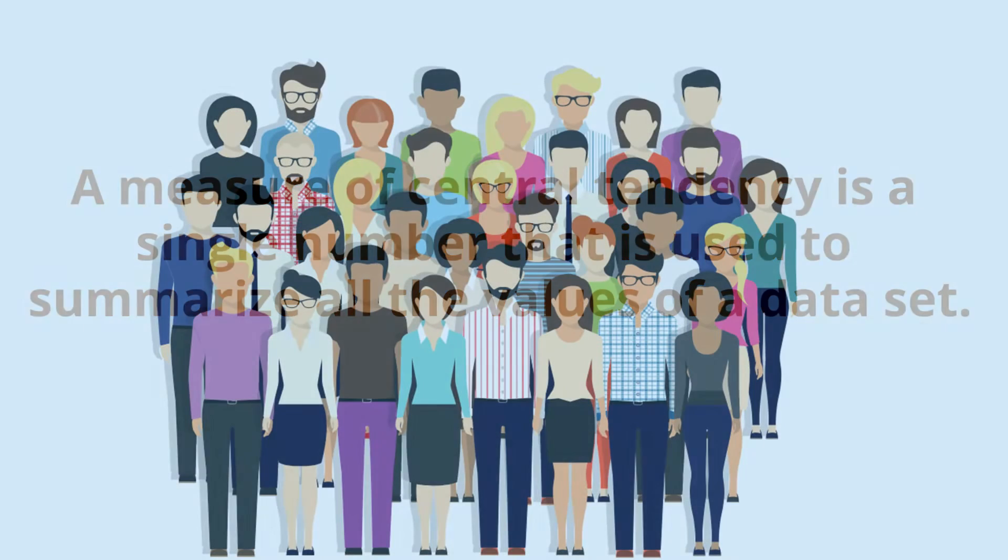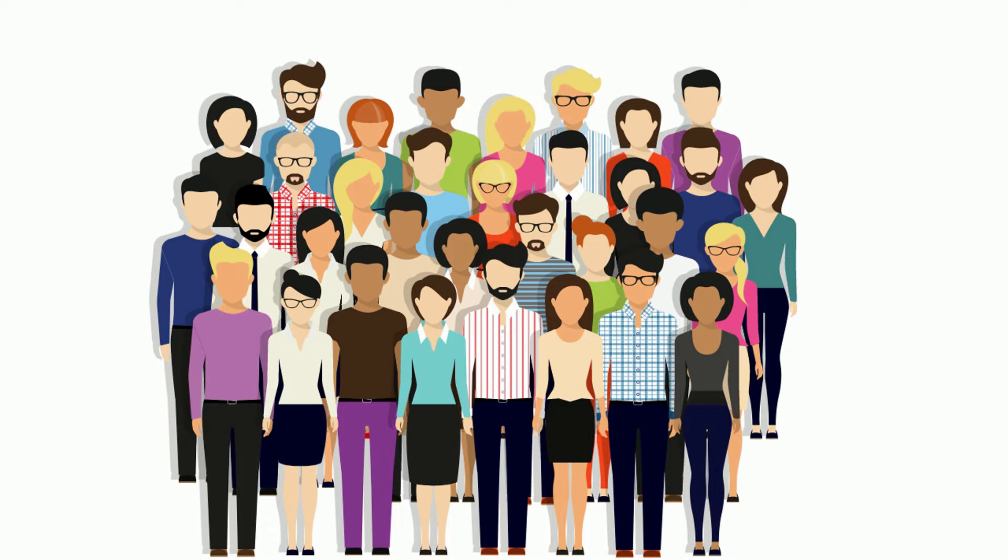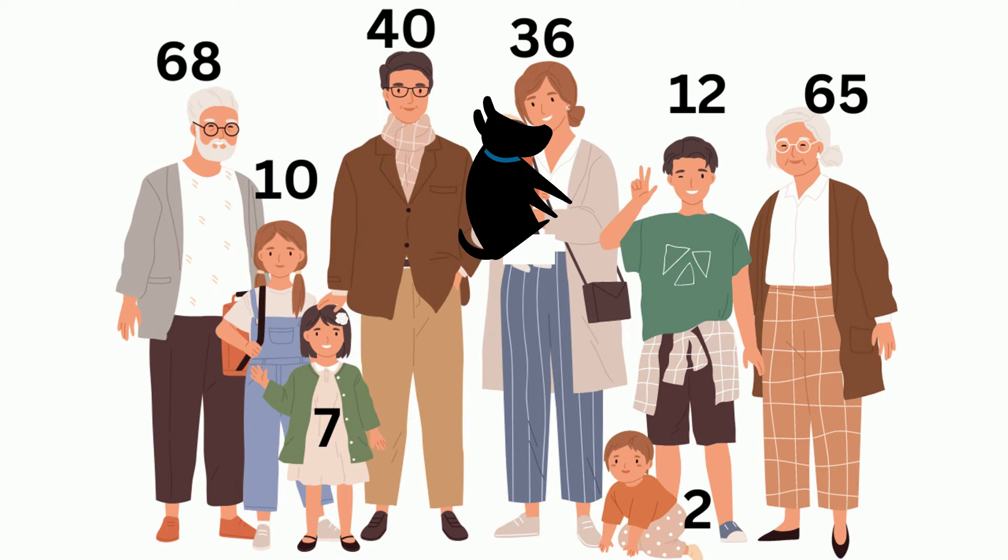For example, you have a group of people. You may want to know if they're all close to the same age, or maybe what's the average height. Let's work an example. Let's work on what's the mean, median, and mode of this family. The ages are 68, 10, 7, 40, 36, 2, 12, and 65.